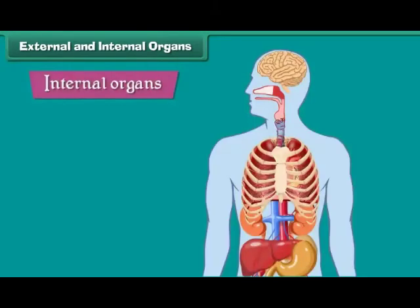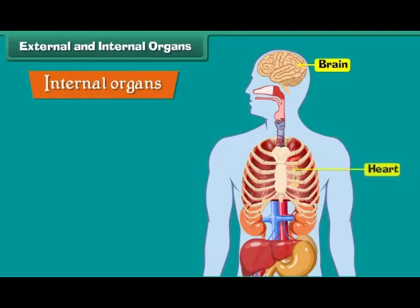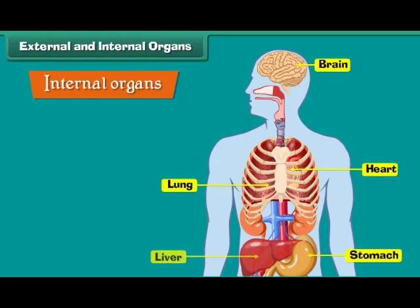The organs that cannot be seen from outside are called internal organs. For example, brain, heart, lungs, stomach, liver, kidneys and bones.